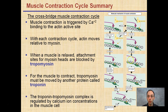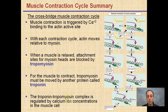When the muscles relax, the attachment sites for the myosin head are blocked again by tropomyosin — calcium leaves and tropomyosin comes back to block myosin from binding to actin. In order for a muscle to contract, tropomyosin must be removed by another protein called troponin. This troponin-tropomyosin complex is regulated by calcium ion concentrations in the muscle cells.